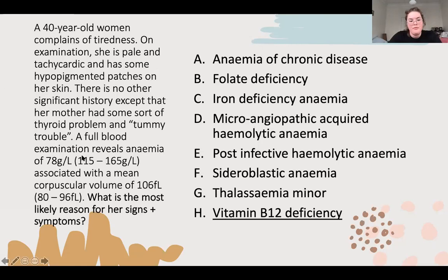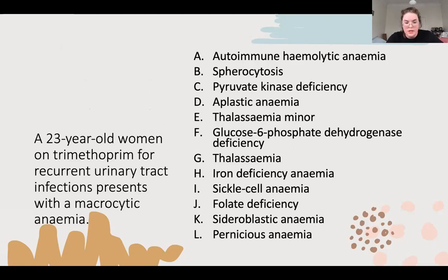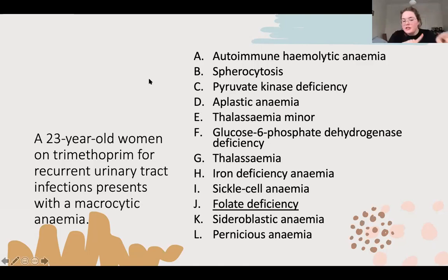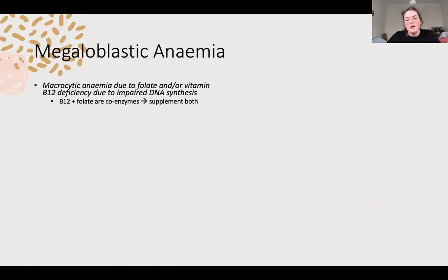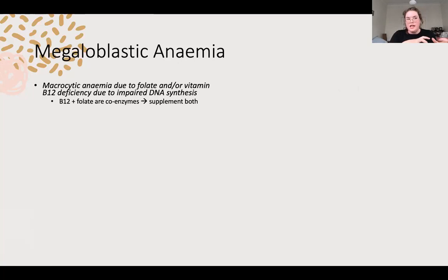Another question: 23-year-old woman on trimethoprim for recurrent urinary tract infections, with a macrocytic anaemia. This is folate deficiency - trimethoprim impairs folate uptake for bacteria, but it also interferes with folate in the patient, causing the anaemia. Folate and B12 make our megaloblastic anaemia, a type of macrocytic anaemia. They're closely linked because when deficient together they impair DNA synthesis, as they're coenzymes. You want to supplement them both together because you need both high for optimal DNA synthesis.